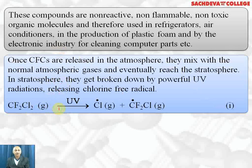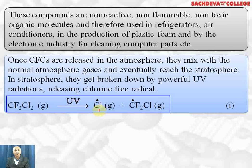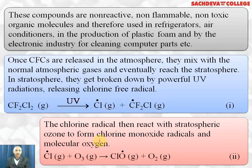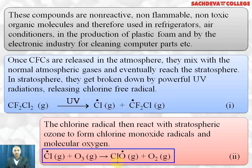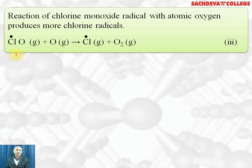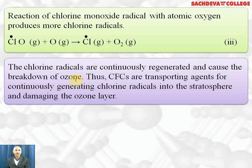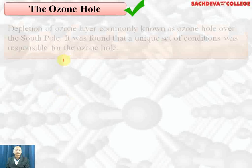In the stratosphere, CFCs get broken down with the help of ultraviolet radiation to chlorine free radicals and difluorochloromethyl free radicals. The chlorine free radicals combine with ozone to form chlorine monoxide free radicals plus oxygen gas. Chlorine monoxide reacts with oxygen atoms to form chlorine free radicals and oxygen. The chlorine radicals are continuously regenerated and cause the breakdown of ozone. Thus CFCs are transporting agents for continuously generating chlorine radicals into the stratosphere and damaging the ozone layer.